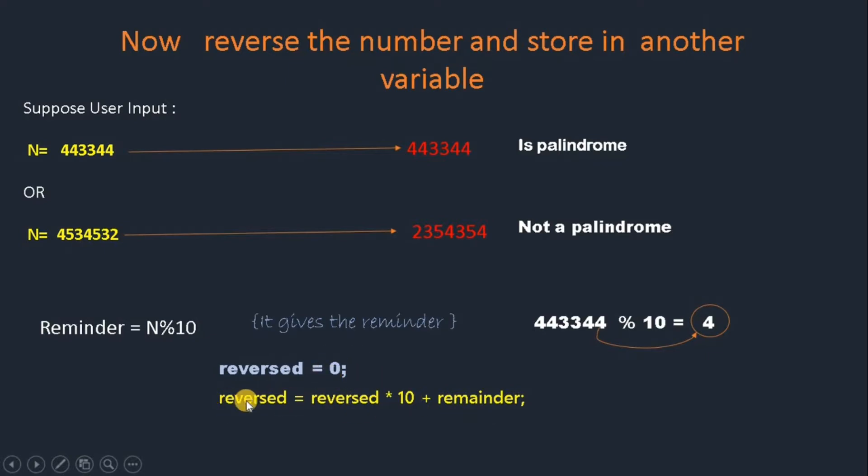If we start with 0 and change the same variable in every loop, you can see: 0 = 0 * 10 + 4, which means we get the reversed value to be 4.